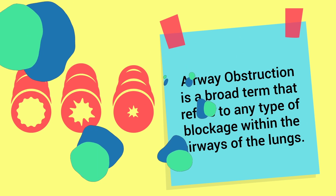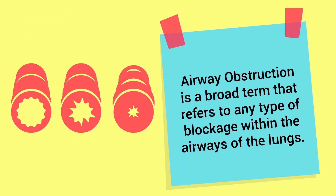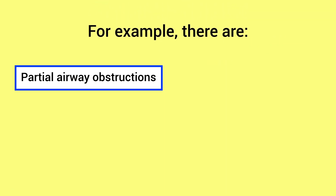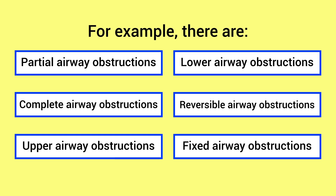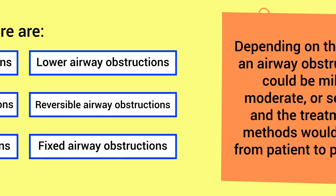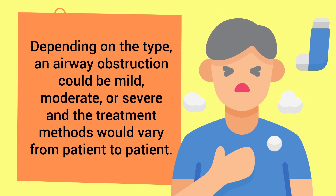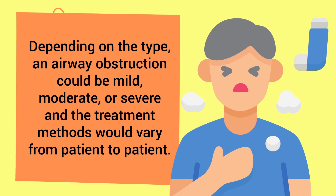Airway obstruction is a broad term that refers to any type of blockage within the airways of the lungs. For example, there are partial airway obstructions, complete airway obstructions, upper and lower, reversible airway obstructions, and fixed airway obstructions. Depending on the type, an airway obstruction could be mild, moderate, or severe, and treatment methods would vary from patient to patient.